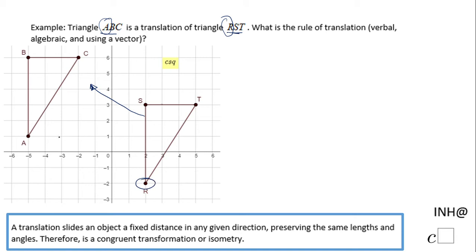Because the translation is from RST to ABC, we can count on the picture: one, two, three, four, five, six, seven units left. And from here we're gonna move one, two, three units up. This is the verbal way to say this transformation.